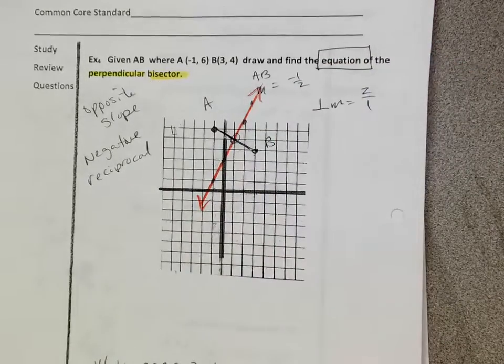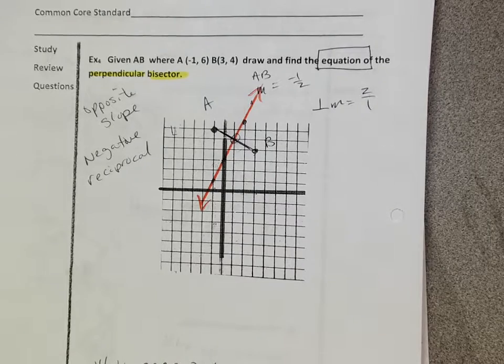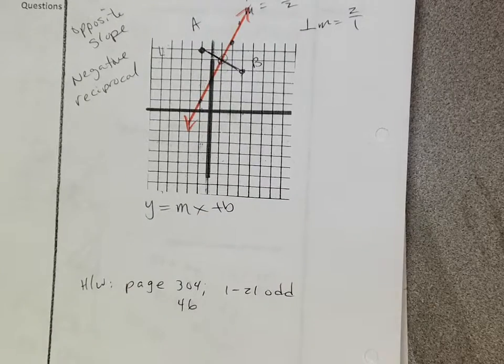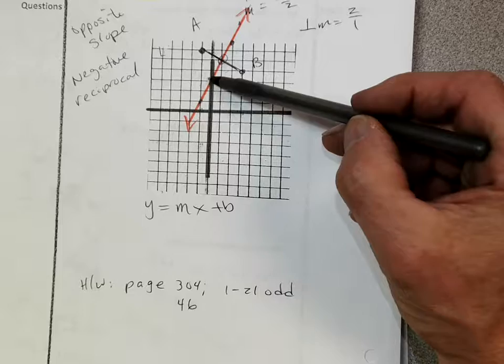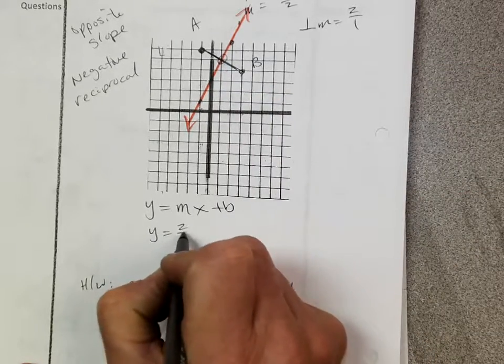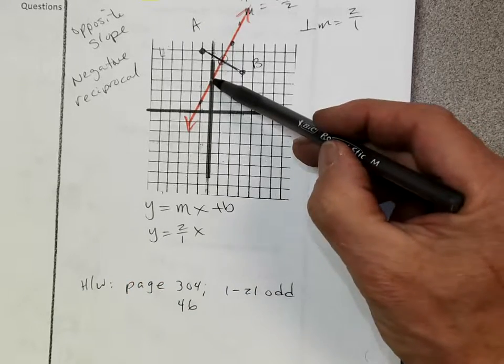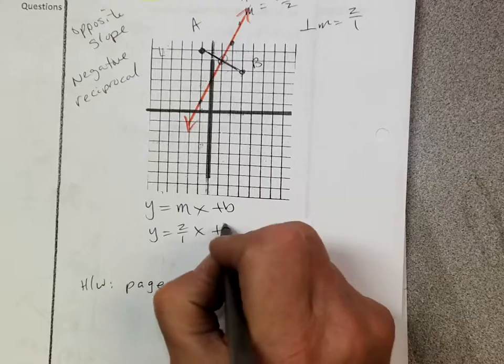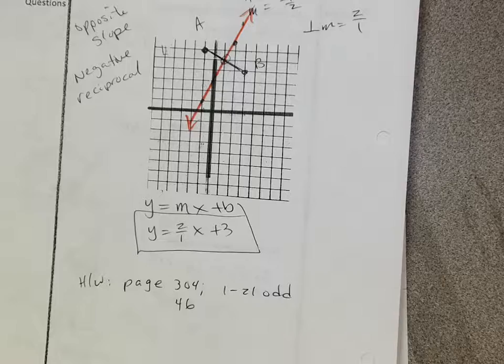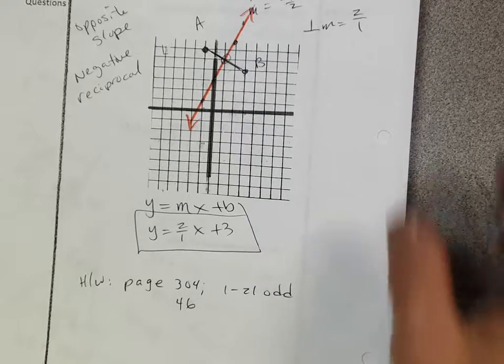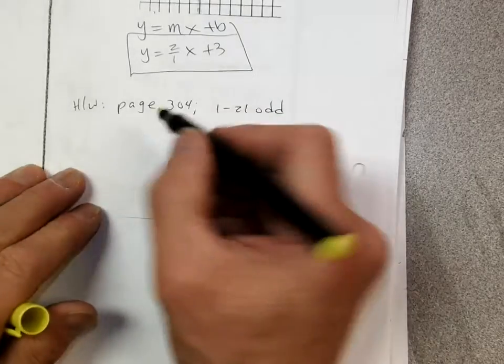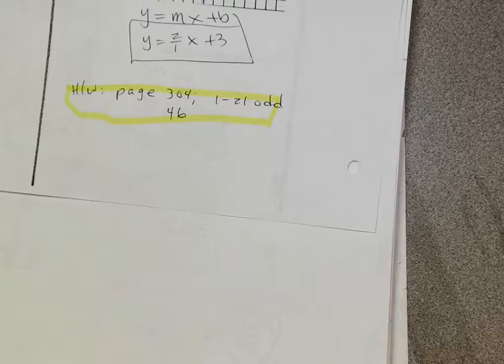To find the equation, we need to go back to algebra. Equation of a line. Remember, Y equals MX plus B. Remember that? So I know the slope of the bisector, that's this orange line, is up 2 over 1. So Y equals up 2 over 1, X, and its Y intercept is at 3, plus 3. That is the equation, the equation of the perpendicular bisector, okay? Thumbs up? That seemed pretty easy. Okay, so not a lot of homework, and we have plenty of time to get it done. Page 304, 1 to 21 odd, and 46.